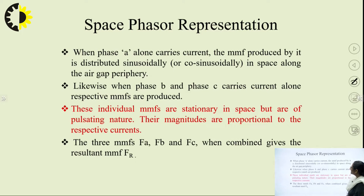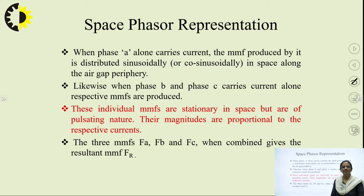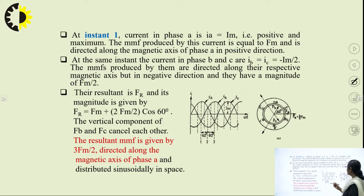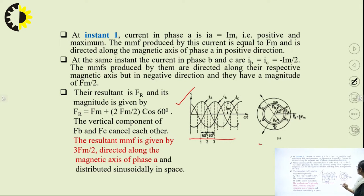When phase A alone carries current, the MMF produced by it is distributed sinusoidally in space along the air gap periphery. Likewise, when phase B or phase C carry current alone, their respective MMFs are distributed along the air gap periphery. The resultant magnetic field in the air gap is the phasor sum of three individual MMFs: FA, FB, and FC. When a 3-phase supply is given to the 3-phase stator winding, a rotating magnetic field is created — and we are going to justify this statement.